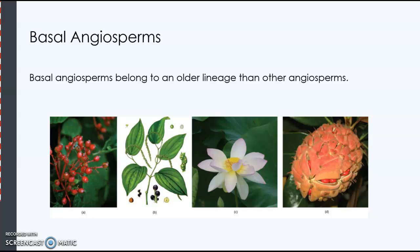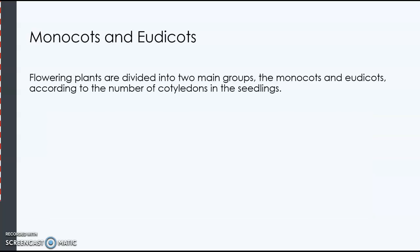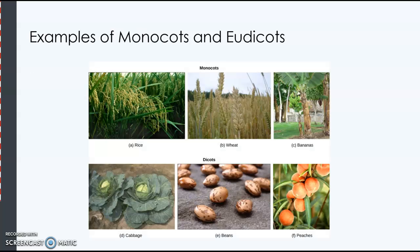Basal angiosperms are older types of flowering plants. We divide most of the flowering plants into monocots and eudicots, depending on the number of cotyledons in the seedlings. A cotyledon is a seed leaf — an embryo seed leaf.